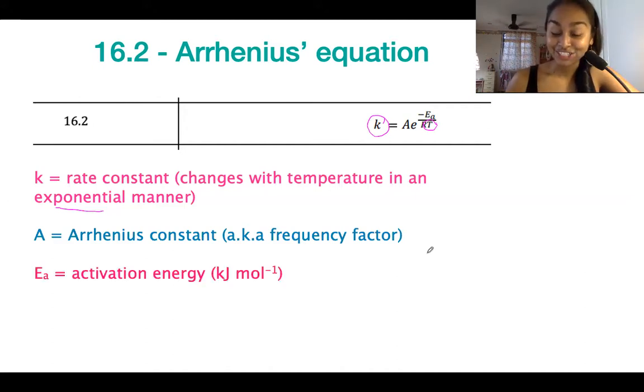Ea is activation energy, so the minimum energy required to start a reaction, and the unit for that is going to be kilojoules per mole. T is going to be temperature in Kelvin, so remember if you get Celsius you can convert that to Kelvin by adding 273.